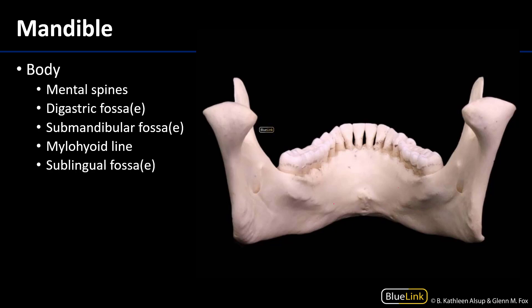We also have a couple of fossae or indentations within the bone. Anteriorly, we have the digastric fossae, which are the anterior attachment sites for the anterior bellies of the digastric muscles. When we think about the osteology in this region, we have these layers: genioglossus, geniohyoid, and then the anterior belly of digastricus.